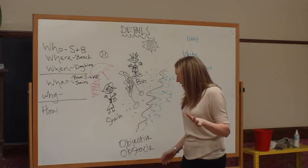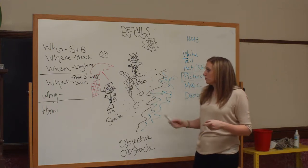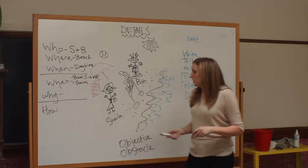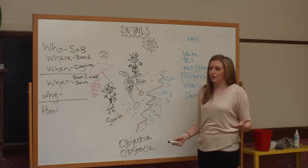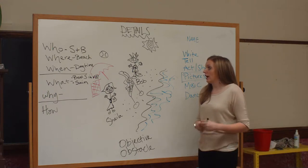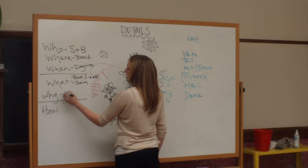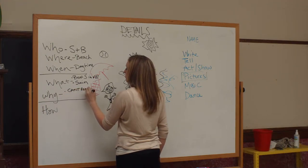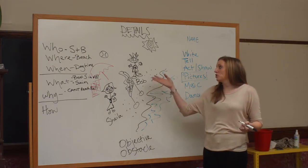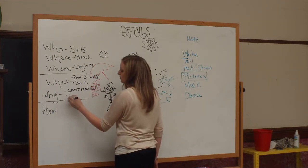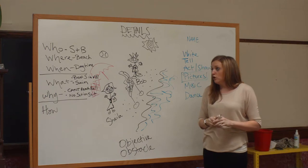Now apply it to the board story. What is Bob's obstacle — why can't he beat Sheila in volleyball? Ideally they say she doesn't want to play, but they might say he can't reach the ball — it's stuck on the umbrella. What's Sheila's obstacle — why can't she go swimming? Again, ideally they say Bob keeps trying to play volleyball, but they'll likely say something like no swimsuit.